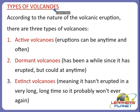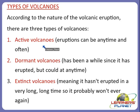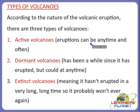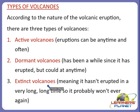Now let us study about the types of volcanoes. According to the nature of the volcanic eruption, there are three types: active volcanoes, dormant volcanoes and extinct volcanoes. Active volcanoes can erupt anytime and often. Dormant volcanoes have not erupted in a while but could occur at any time. Extinct volcanoes haven't erupted in a very long time and probably won't occur ever again.